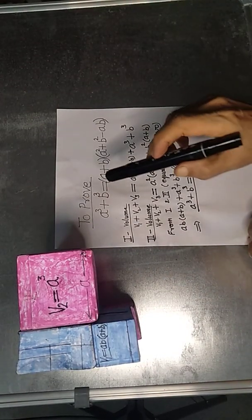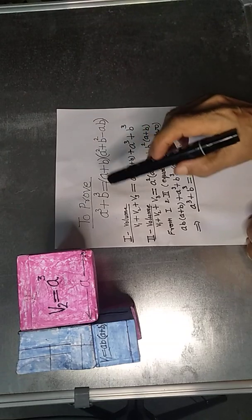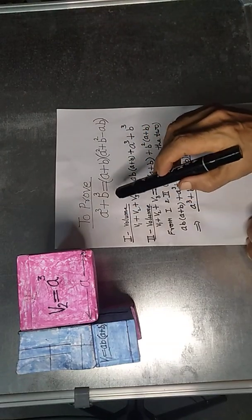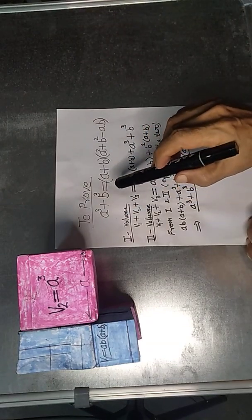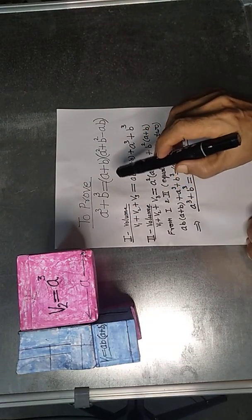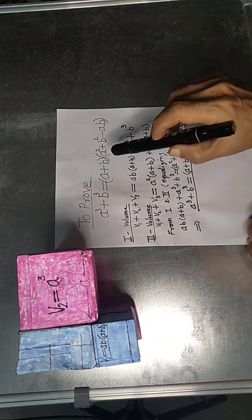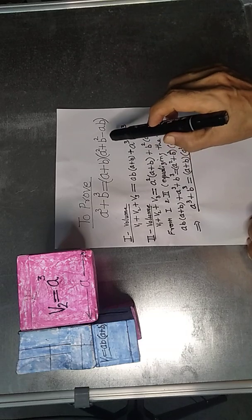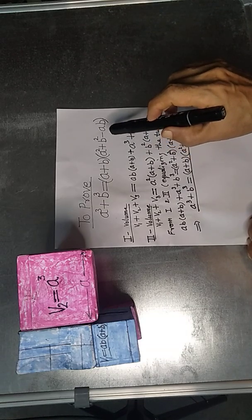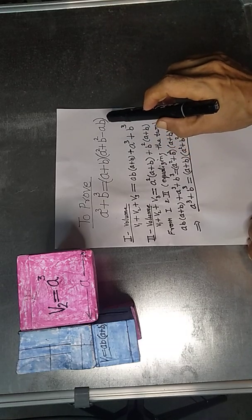Here we have to prove the identity: a cube plus b cube is equal to a plus b into a square plus b square minus ab.